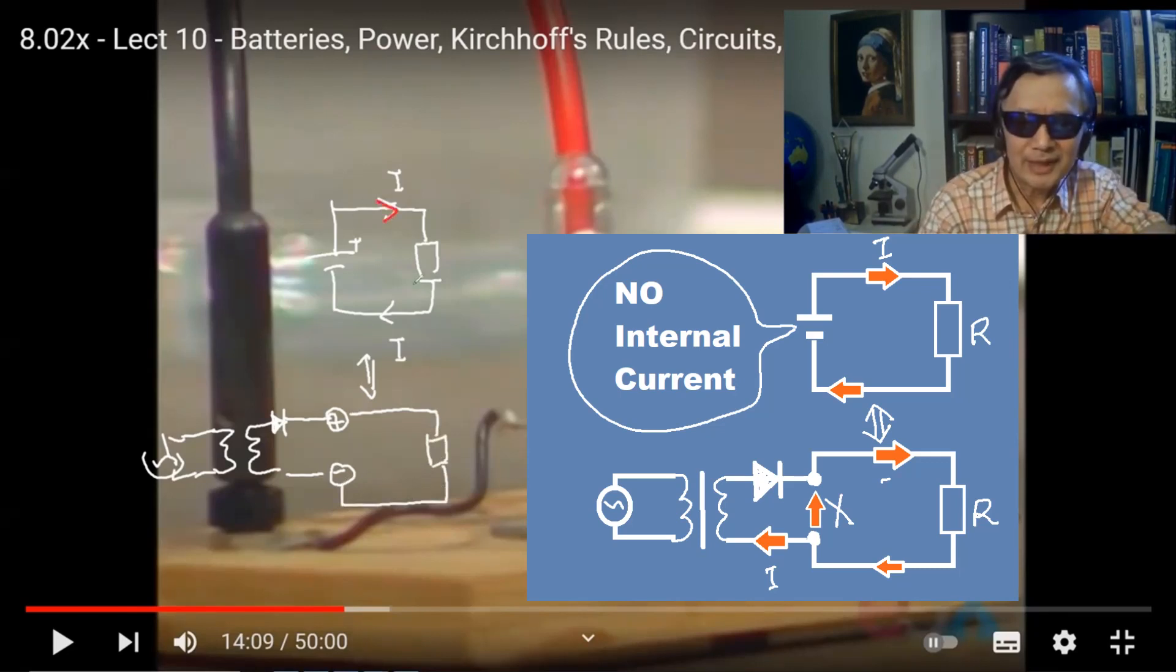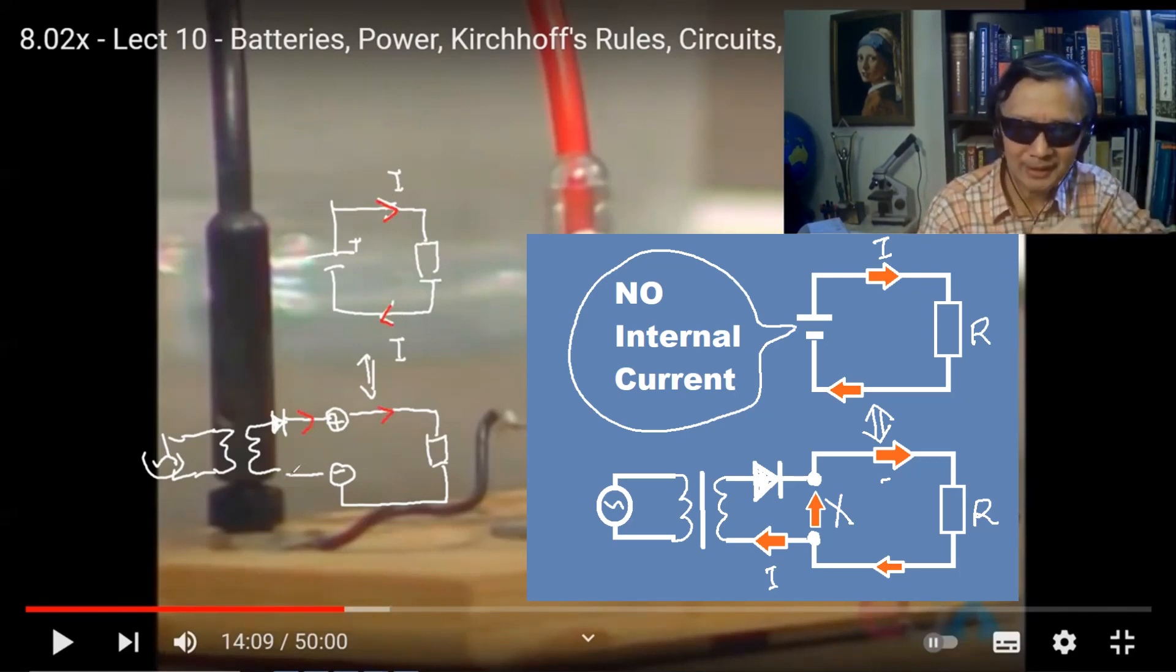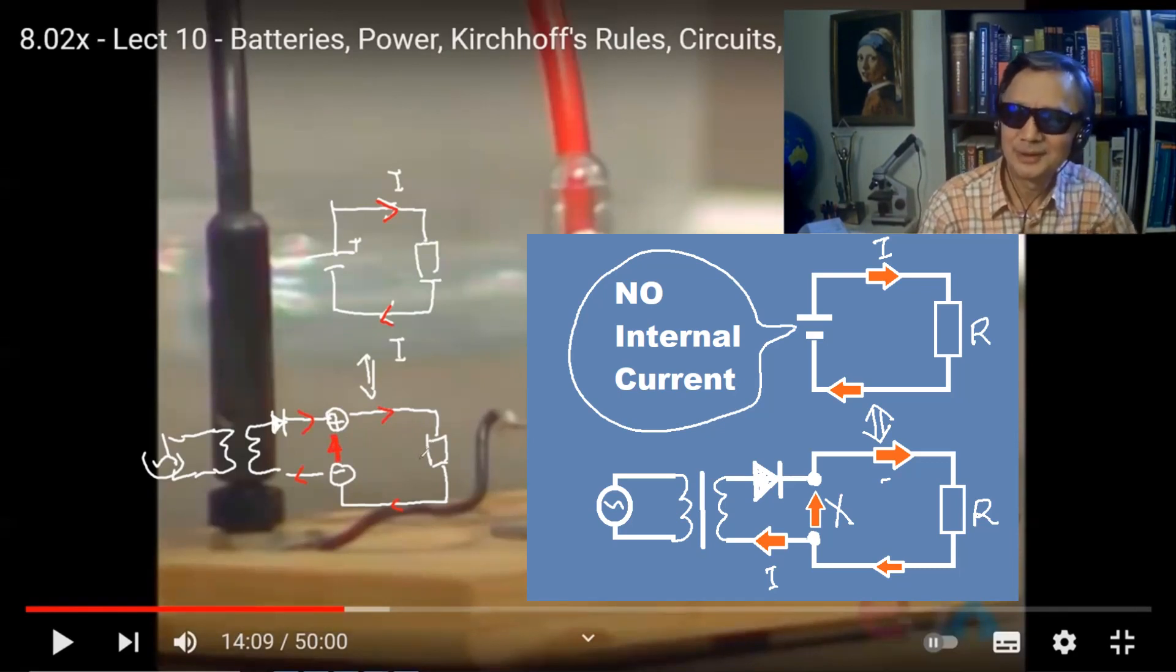We know that the current goes that way. And so does this one. So the current goes all the way from the power supply and then returns to the power supply. Do you think that we have to make sure there is a current change from negative to the positive? Certainly not.